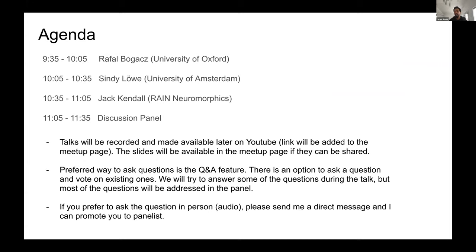We always hear two assumptions: that the brain doesn't backpropagate, and that deep learning only works with backpropagation. Today we try to challenge both of these assumptions. We start with Professor Rafael Bogacz from the University of Oxford, who will show us that the brain might implement something akin to backpropagation. This will be followed by a talk by Cindy from the University of Amsterdam and Jack from Brain Neuromorphics, who will show on the machine learning side that deep neural networks can learn without backpropagation or something which approximates it. At the end, we have a discussion panel.